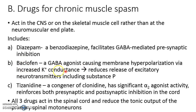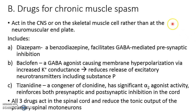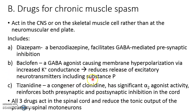Another drug is baclofen, which is a GABA agonist that causes membrane hyperpolarization. Instead of depolarizing, it causes hyperpolarization — making the membrane potential more negative — by increasing potassium conductance. This reduces the release of excitatory neurotransmitters including substance P, eventually leading to reduction in muscle tone, reduction in pain, and increased mobility.